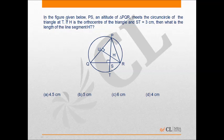So the question says in the figure given below, PS is an altitude, so this is 90 degrees, of triangle PQR and it meets the circumcircle of the triangle at T. So it meets the circumcircle of the triangle at T.